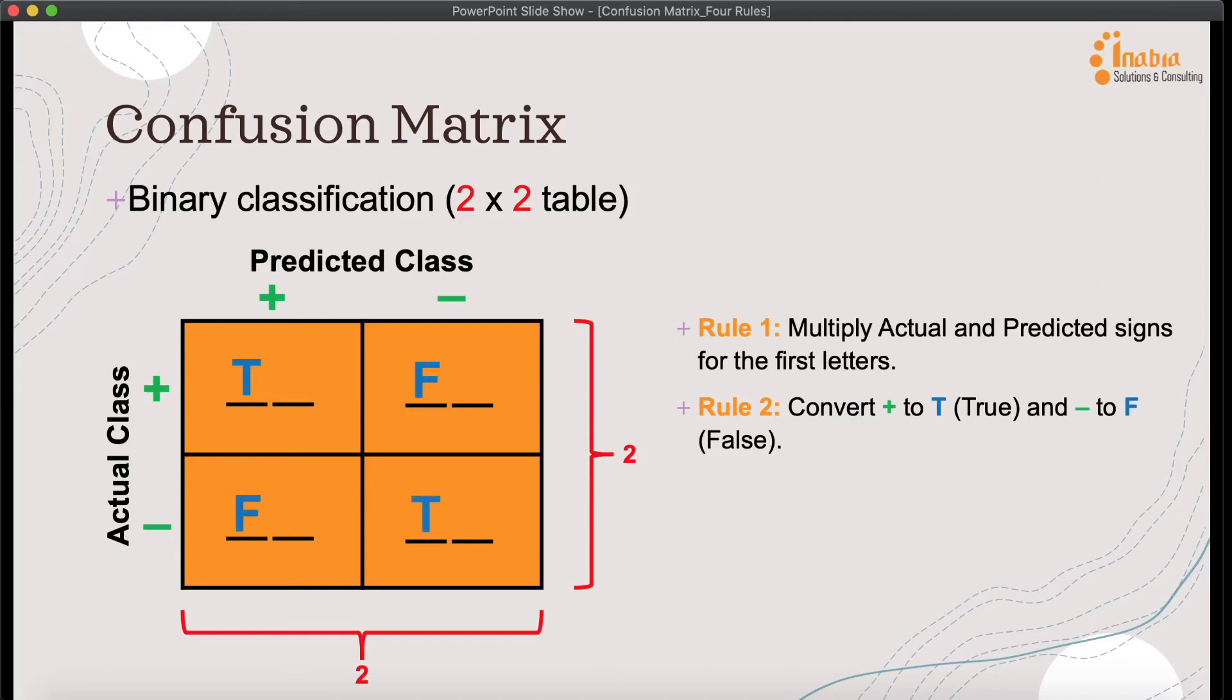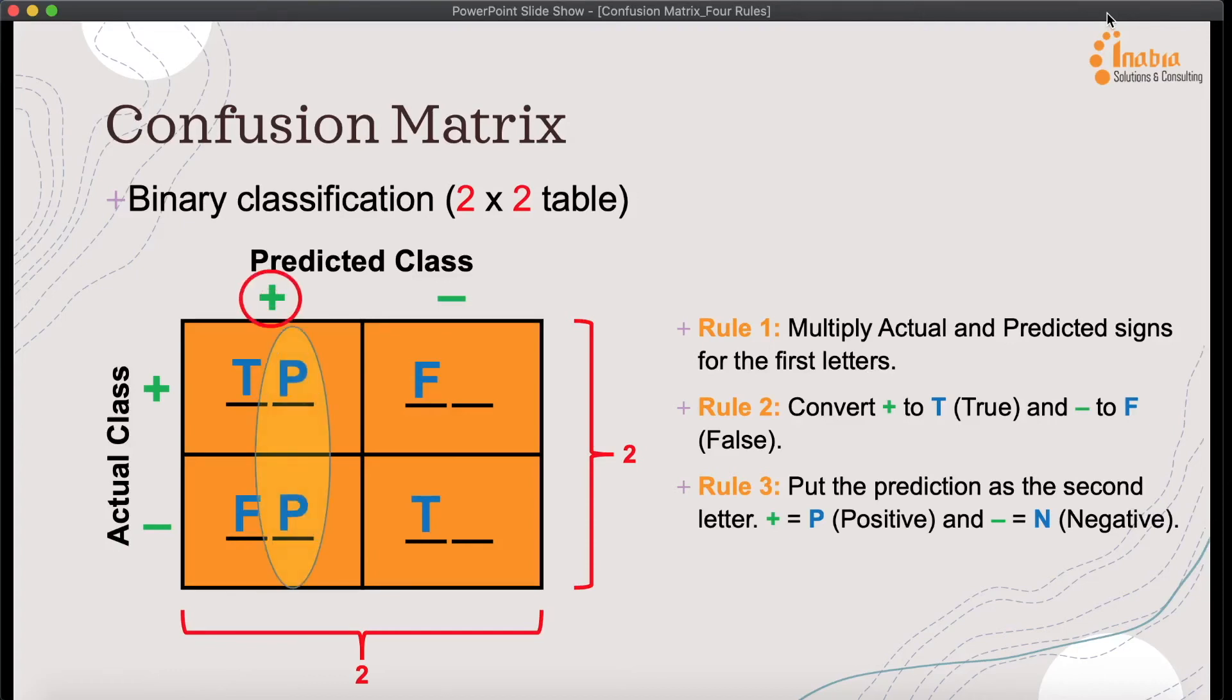All right, the first letter of each cell was completed. Let's move on to the second letters. Rule Number Three: put the prediction as the second letter. For instance, put the letter P to the column where predicted class is positive, and put the letter N to the column where predicted class is negative.